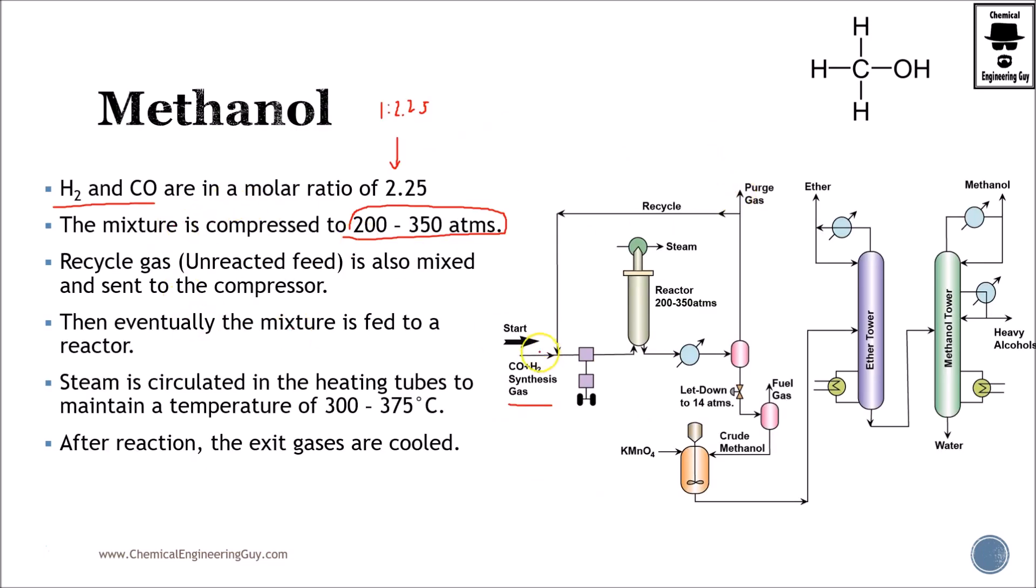Then we increase the pressure drastically because this is going to be at very high pressure. We will be recycling material because we don't want to waste materials. What type of material? Typically hydrogen gas leftover, CO2 leftover, maybe even some vapor leftovers, and of course some methanol leftovers. Once we mix these, pressurize, and get the correct temperature, we bring this to a reactor. The reactor contains a catalyst and will operate between 300 up to 375 Celsius depending on the conditions.